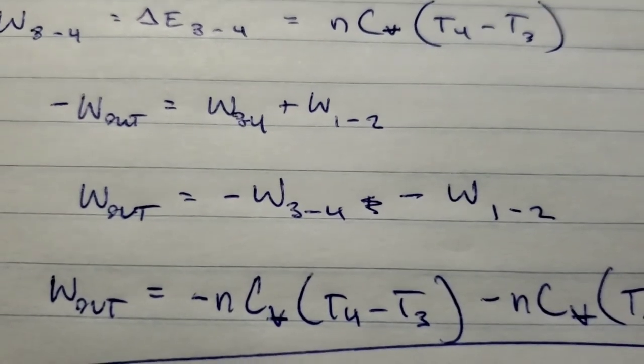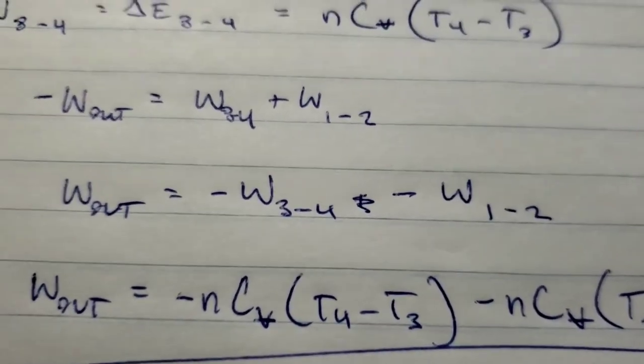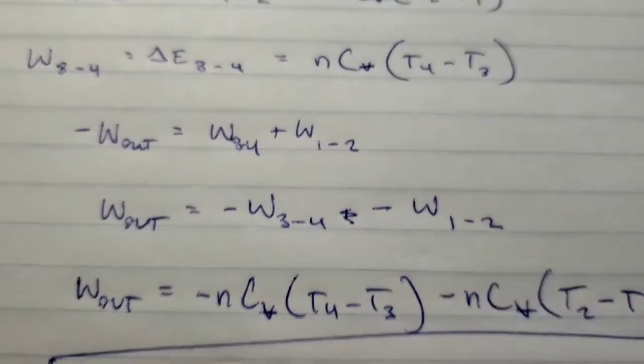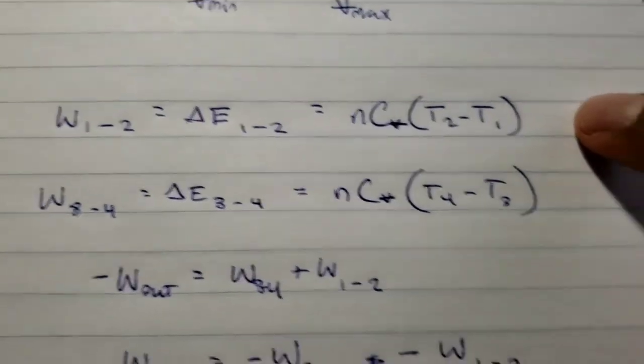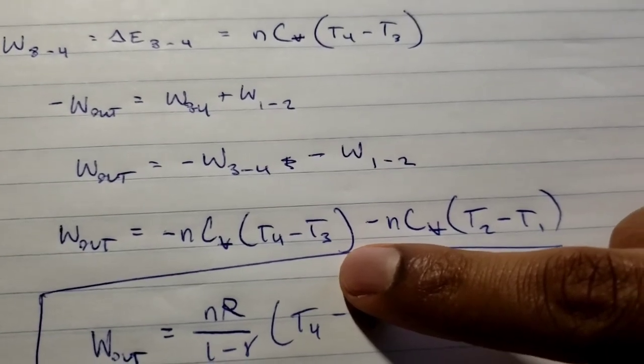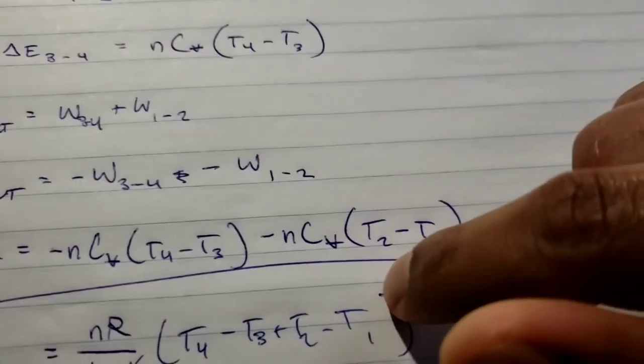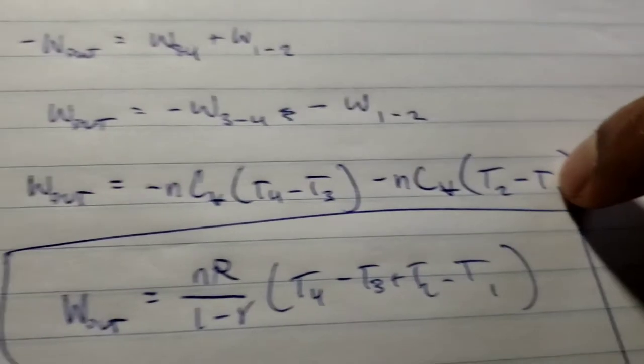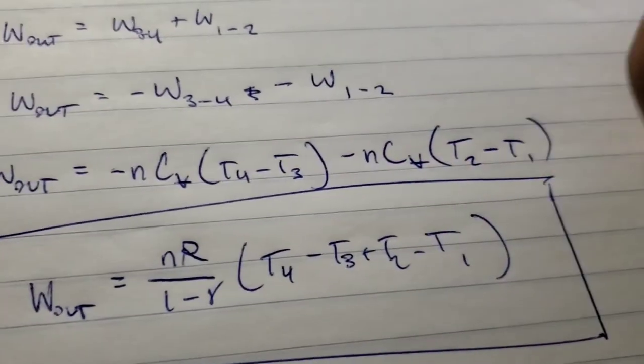We can substitute in for those two terms with the things we found above. For the first one, we'll substitute in nC_v times T_4 minus T_3. And similarly for the other term, we get this. This is an expression for work out.